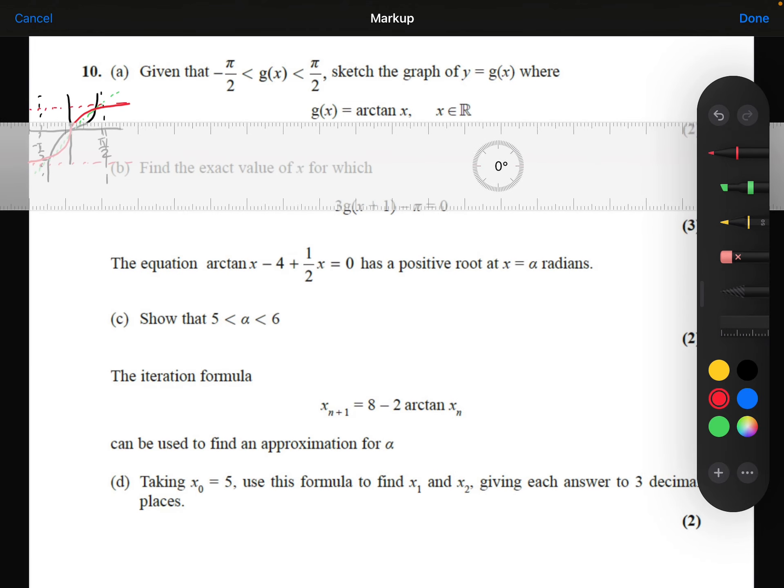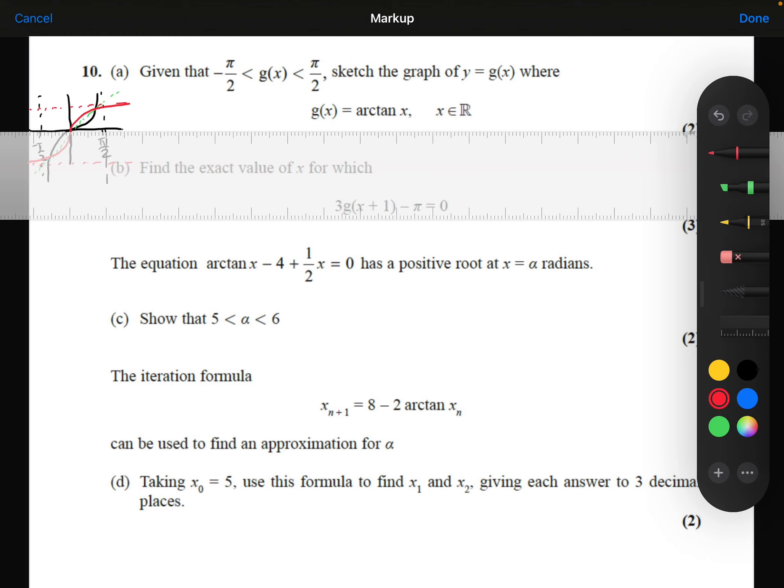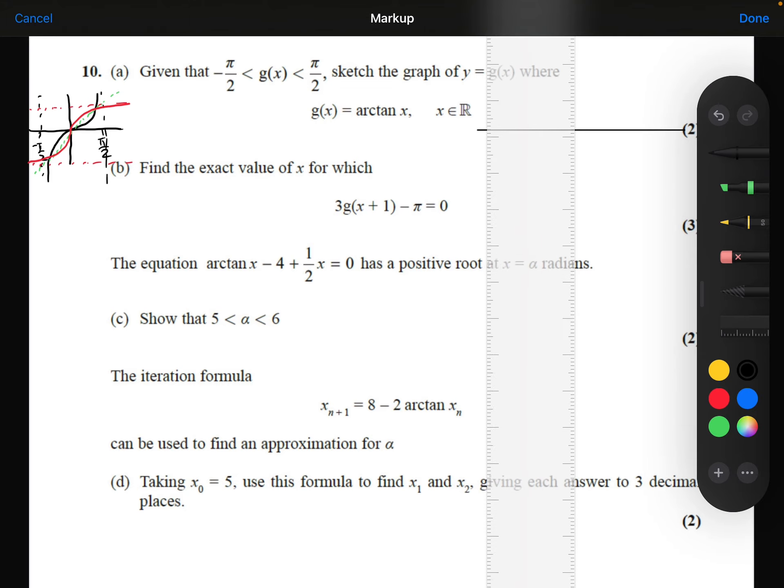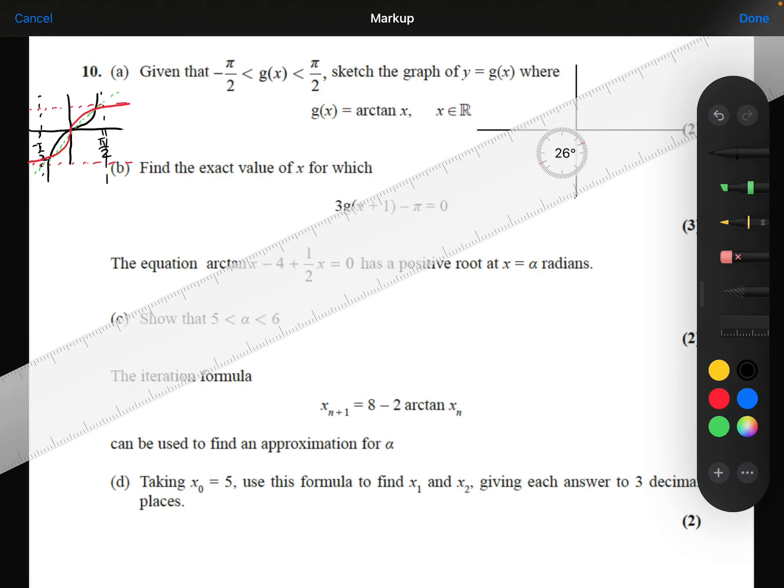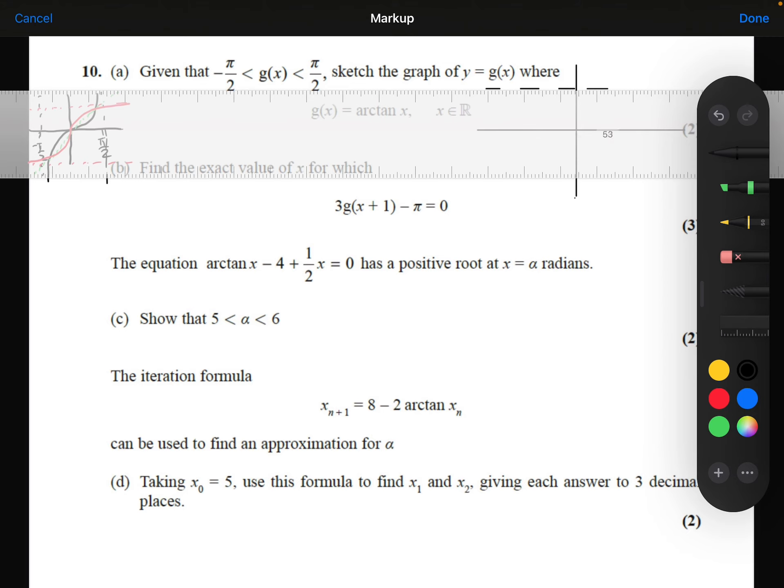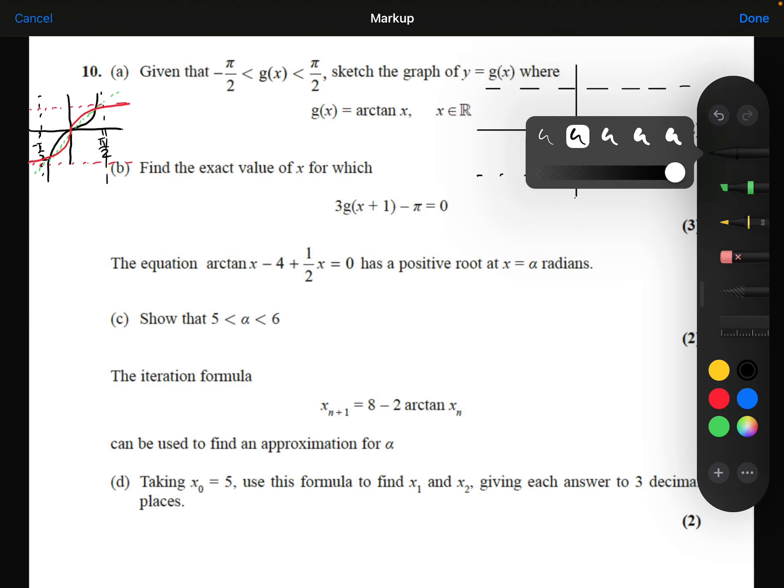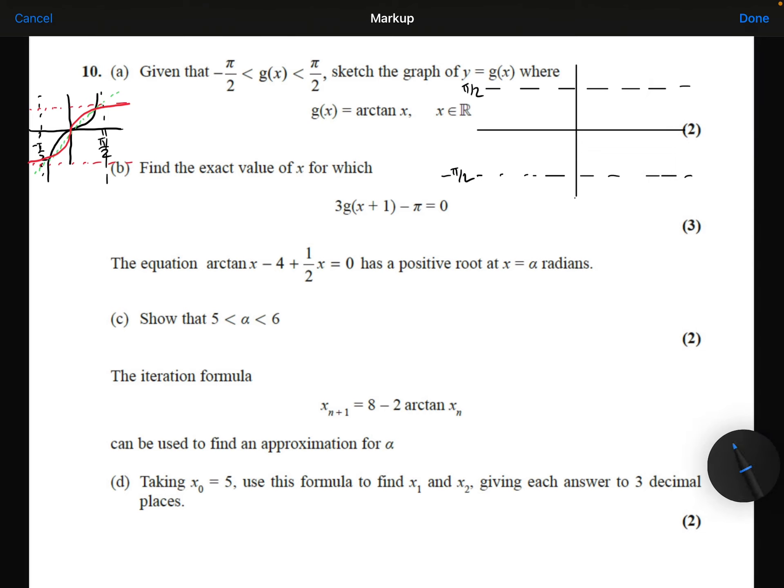So let me draw a neater, proper version of my graph now. So here are my axes. Let me draw my asymptotes in. So I've got an asymptote here at positive pi over 2, and I've got another asymptote here at minus pi over 2. And the graph of arctan looks like this. So yeah, that's my answer for part A.